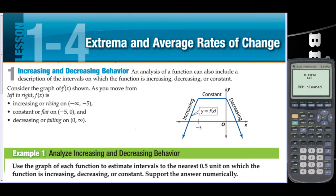Consider the graph of f of x shown. As you move from left to right, f of x is increasing on negative infinity to negative 5. This function is increasing from negative infinity to negative 5, constant from negative 5 to 0, and then decreasing from 0 to infinity. When we say it's decreasing from 0 to infinity, we mean the x value is 0 to infinity, because the y value would be going down to negative infinity.